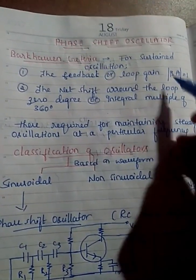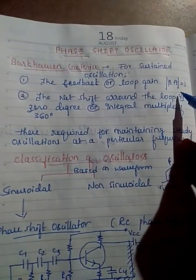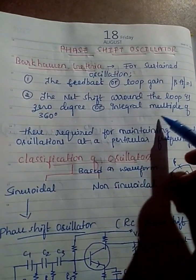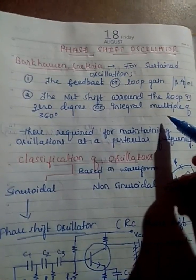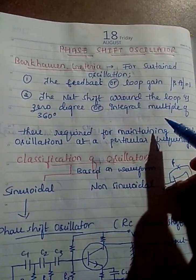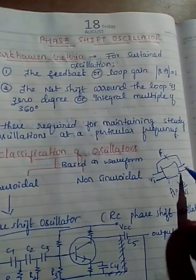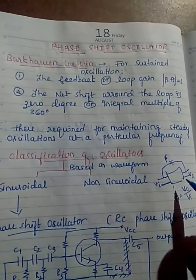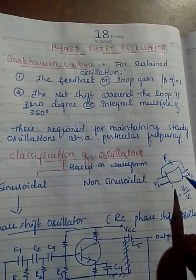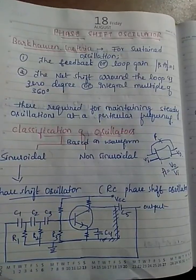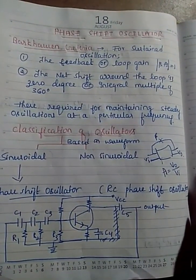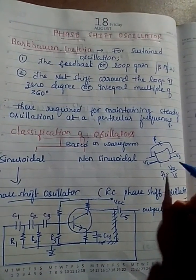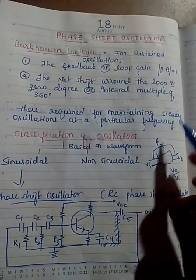For a sustained oscillation, the feedback or loop gain should be unity. The second condition is that the net phase shift around the loop should be 0 degrees or an integral multiple of 360 degrees. This means the total phase difference from output to input should be zero, which is required for maintaining steady oscillation at a particular frequency.